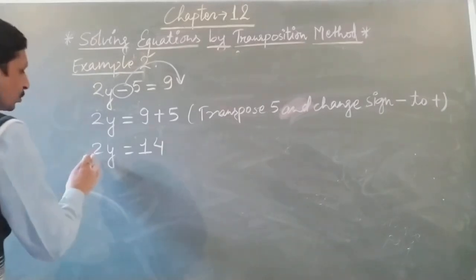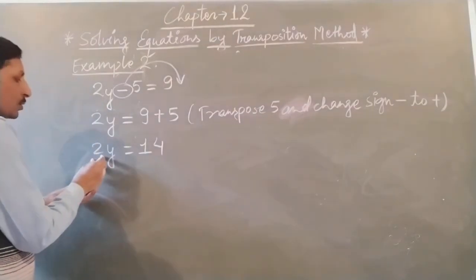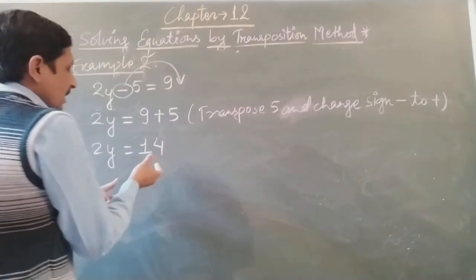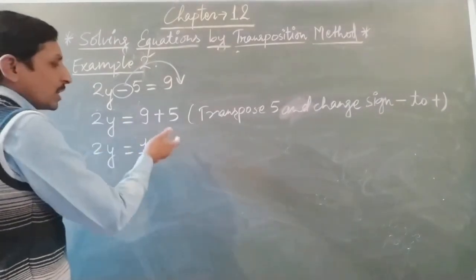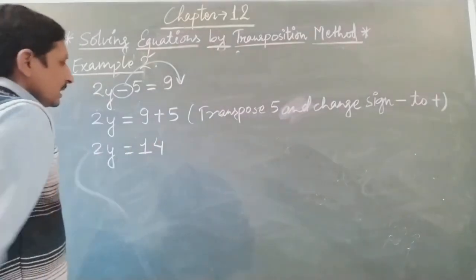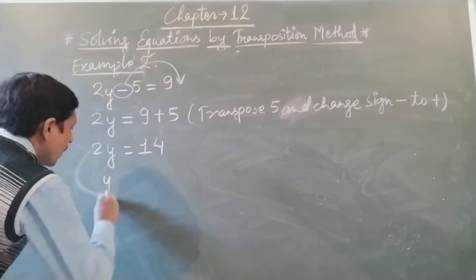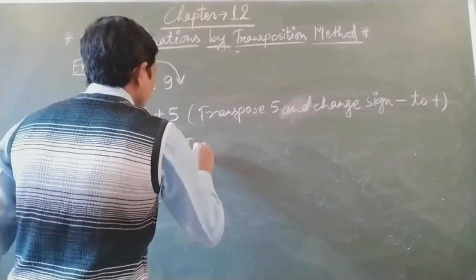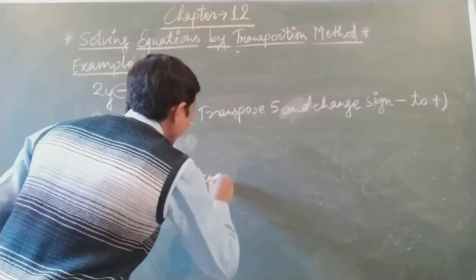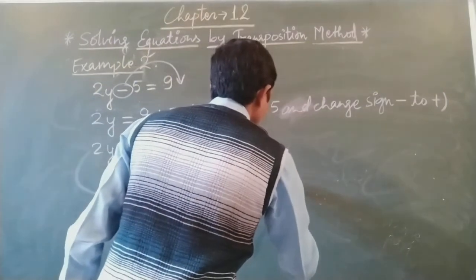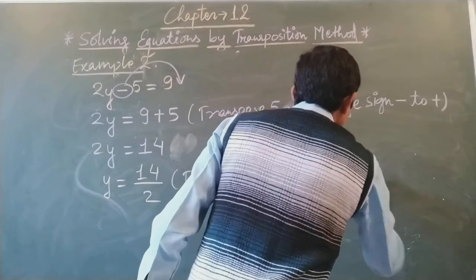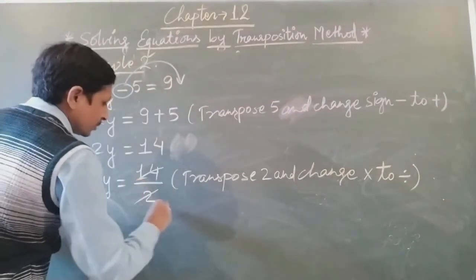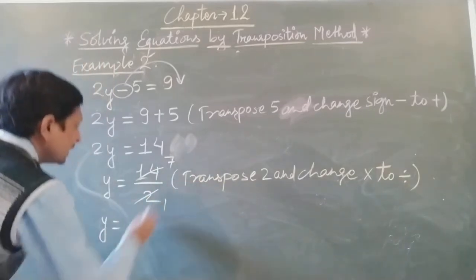Now again we have to transpose 2 to the other side of the equation. Here, 2 is in multiplication with y. When we transpose 2 to the other side of the equation, multiplication is changed into division. So y equals 14 divided by 2. We transpose 2 and change multiplication to division. 14 divided by 2 gives us 7. So y equals 7.